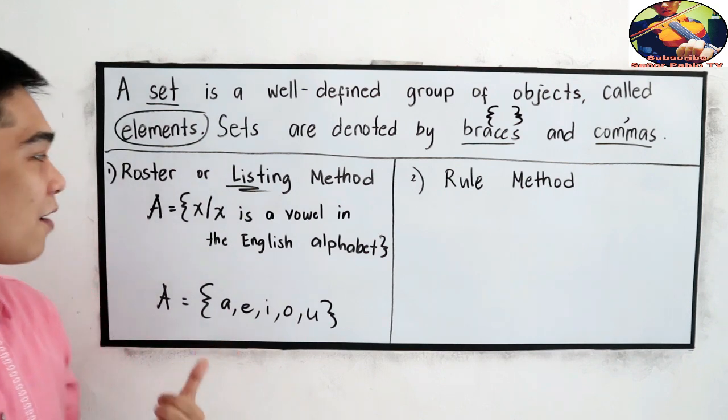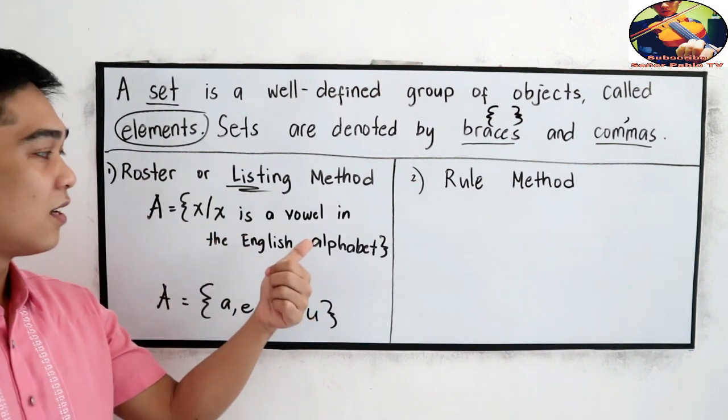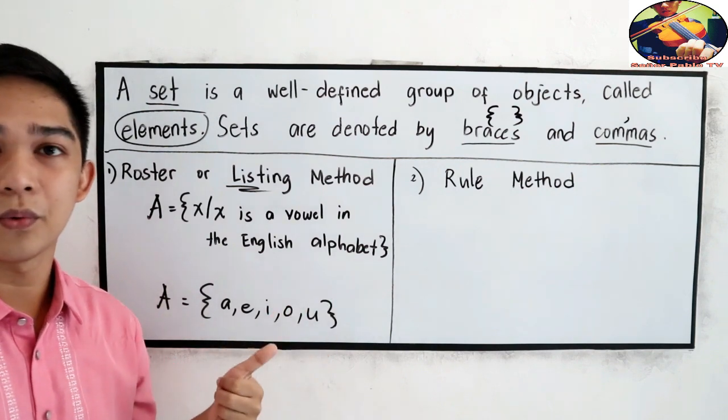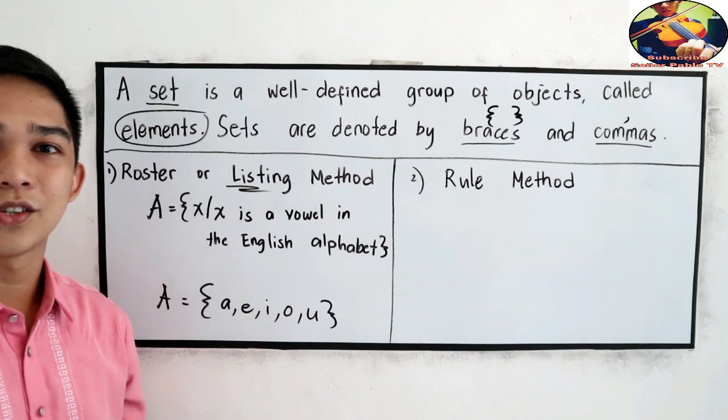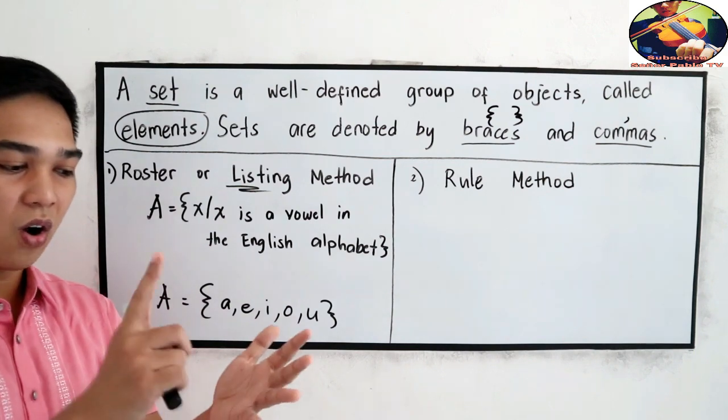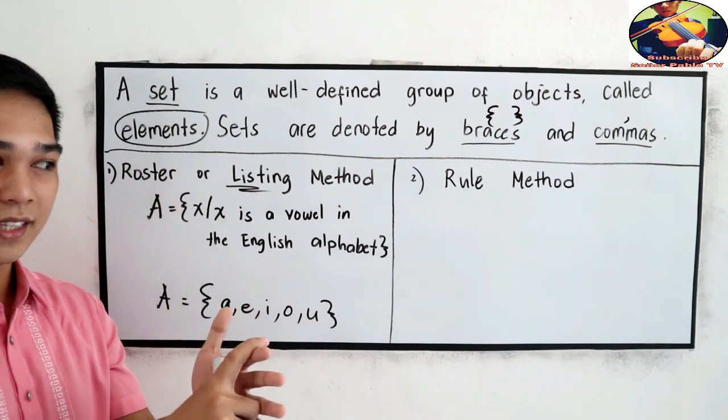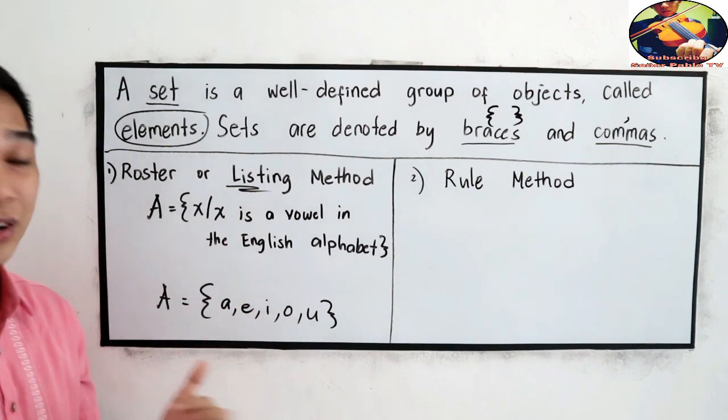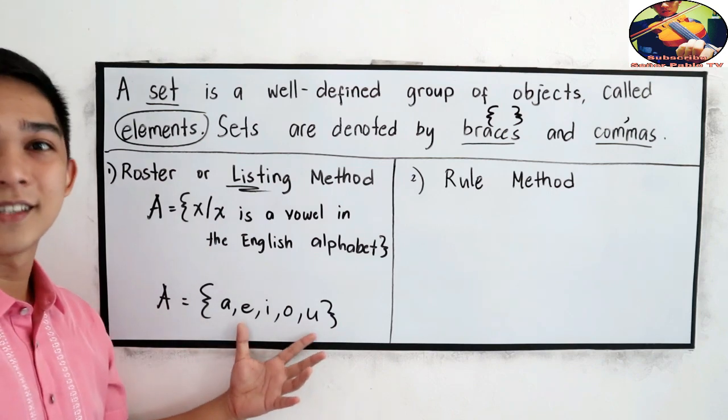Let's say we have x such that x is a color in rainbow. So, we have the ROYGBIV. Red, Orange, Yellow, Green, Blue, Indigo, and Violet. So, you are going to list those in our set.